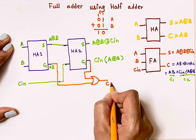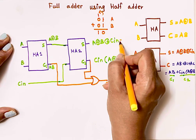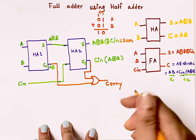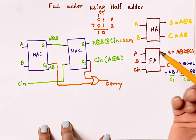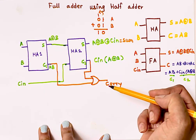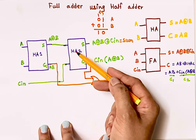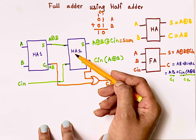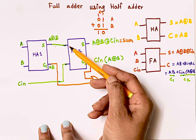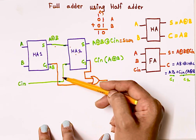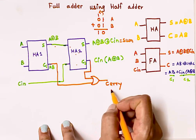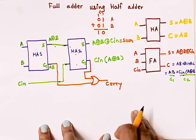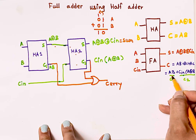This is the final carry and this is the final sum. In this way we design a full adder using half adders. Input to the first half adder is A and B; input to the second half adder is the sum output of the first half adder and C-in; and one OR gate is added to combine the two carries.